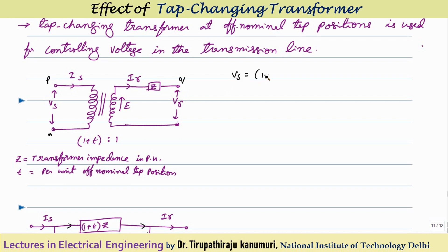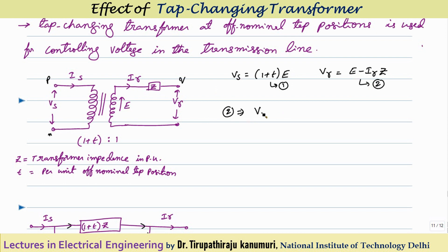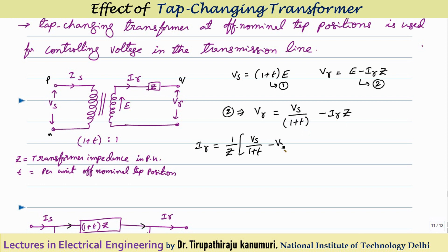First, I can write Vs = (1 + T) × E, since this gives the value of Vs. Similarly, Vr = E − Ir × Z. Taking these as equations 1 and 2, from equation 1 I get E = Vs / (1 + T). Substituting into equation 2 to eliminate E, I get Vr = Vs/(1+T) − Ir×Z. From this, the receiving end current is Ir = (1/Z) × [Vs/(1+T) − Vr].